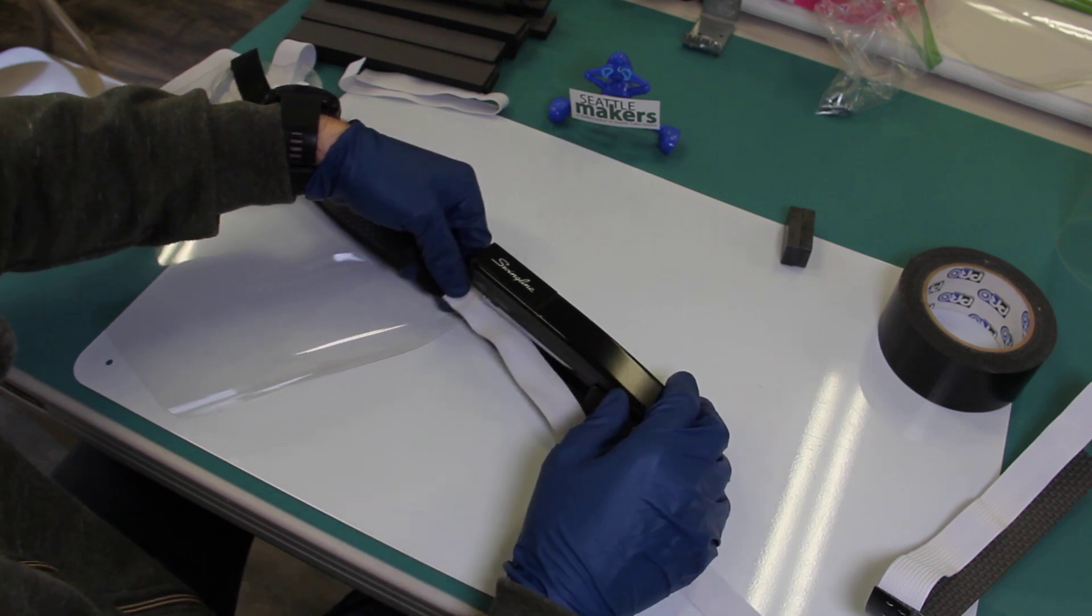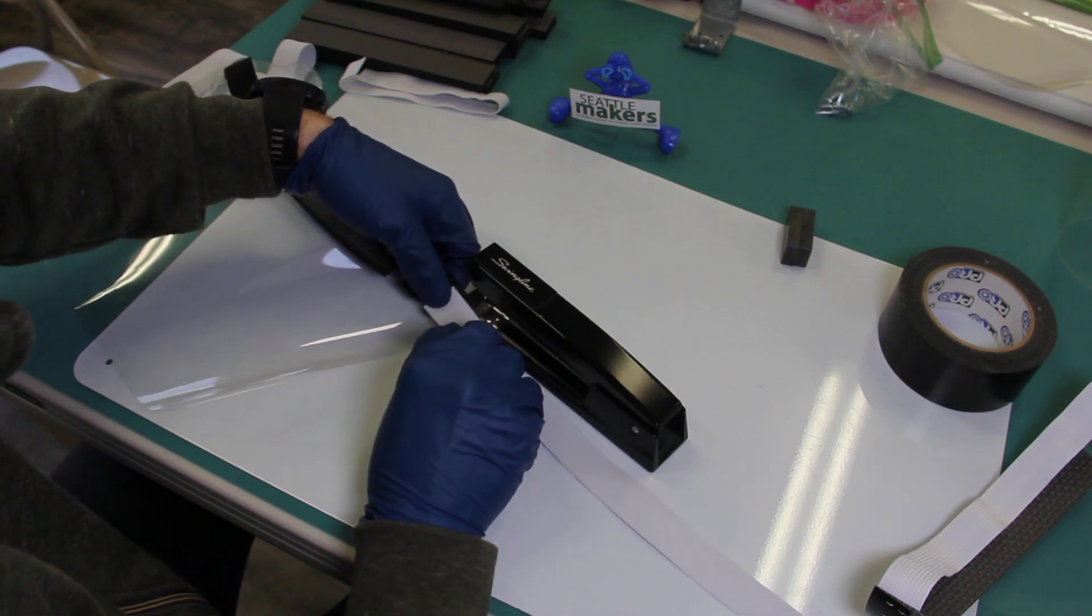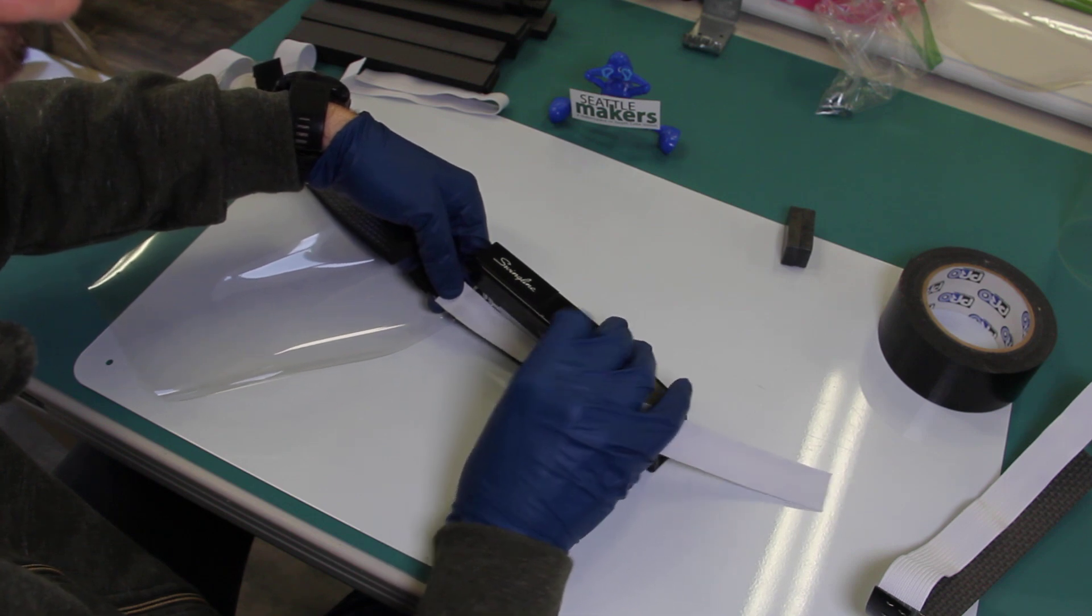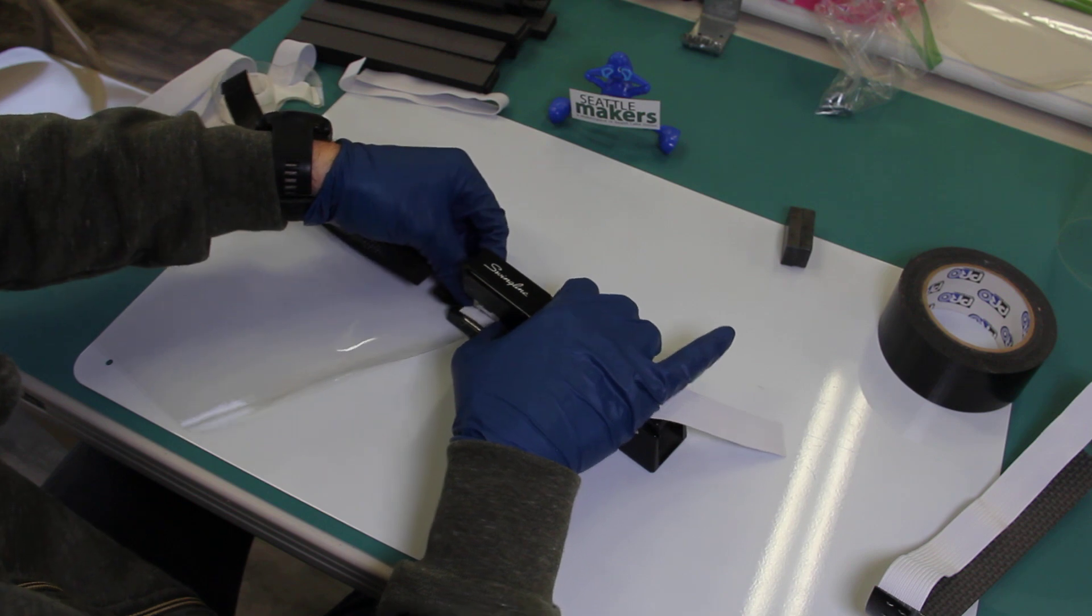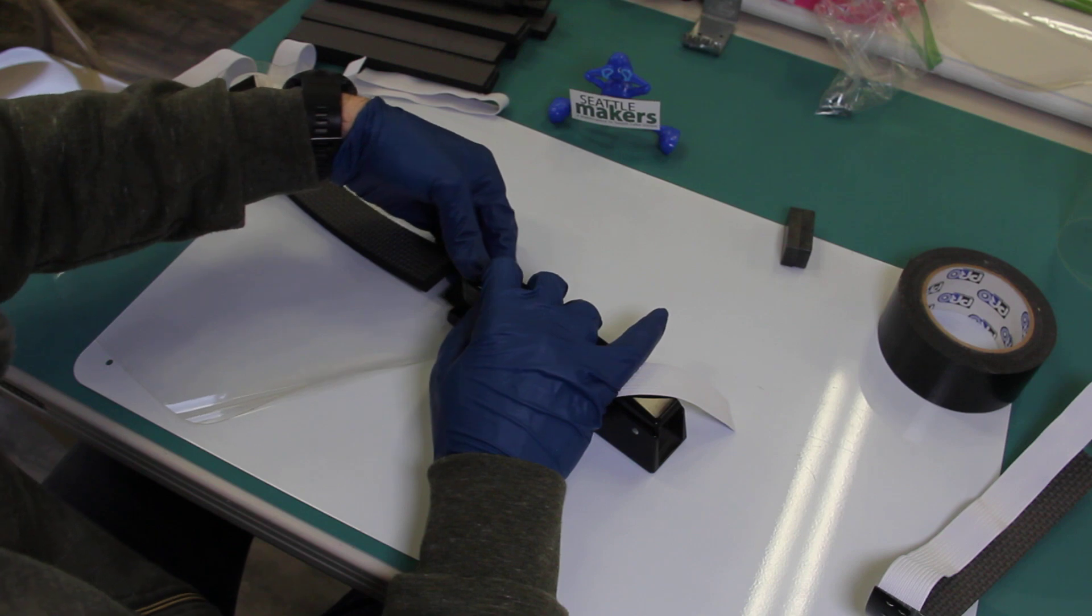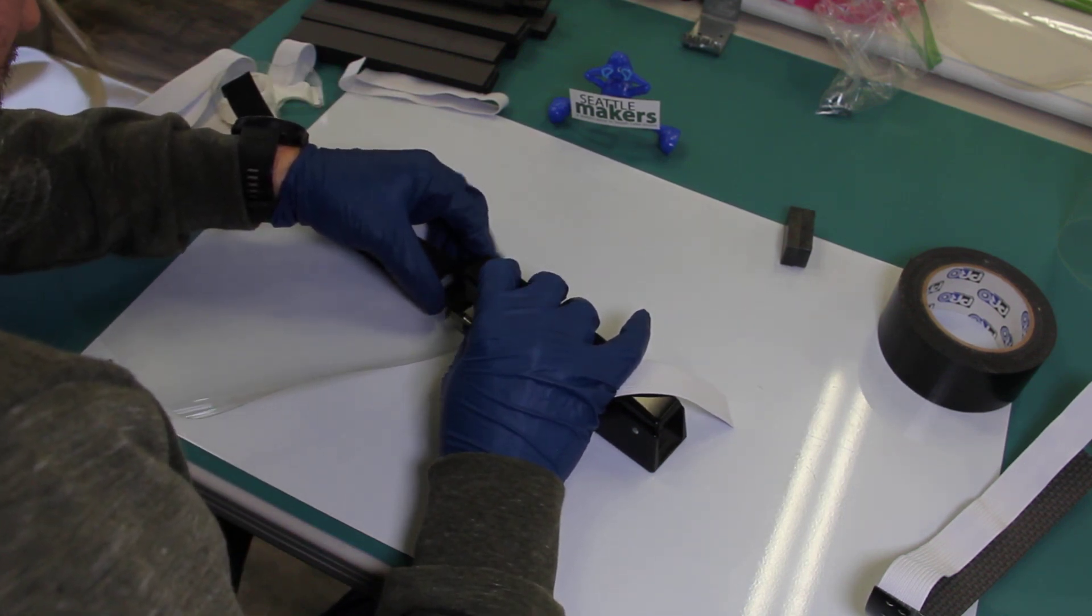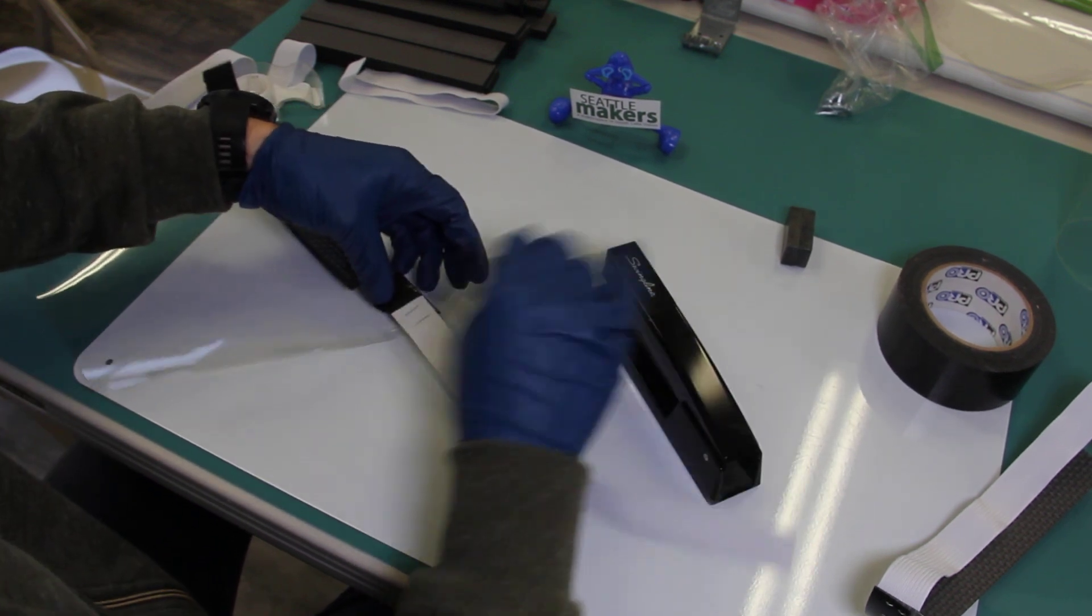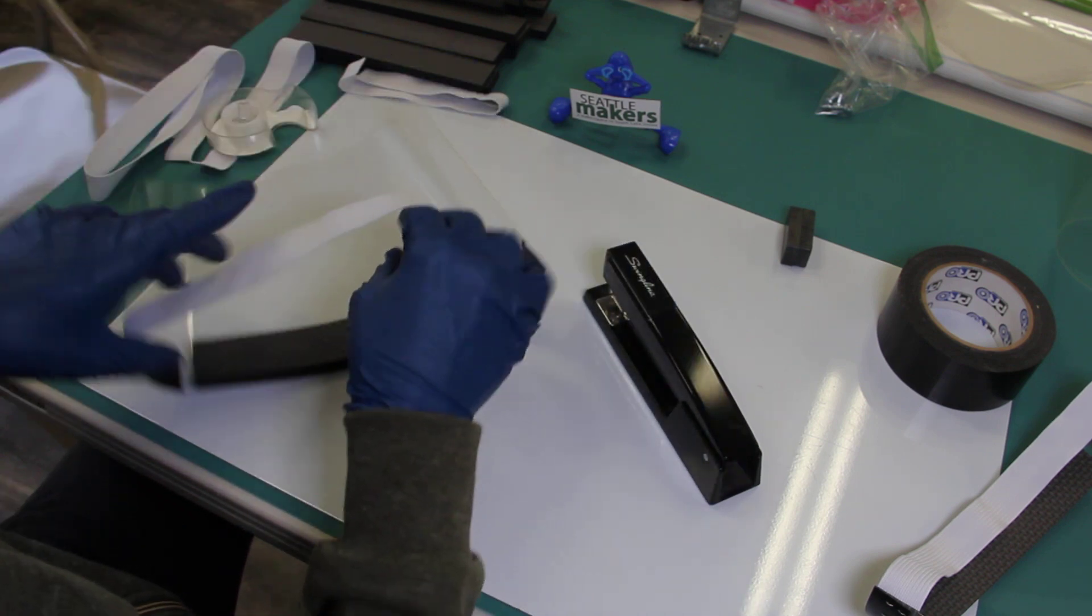The biggest issue here is going to be it wanting to bend that way. So you want to start by just putting some force and pushing this into here. That's going to make lining this up a whole lot easier. And then we'll do the same on the other side.